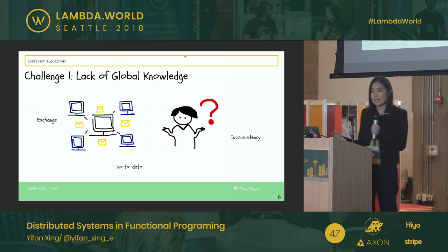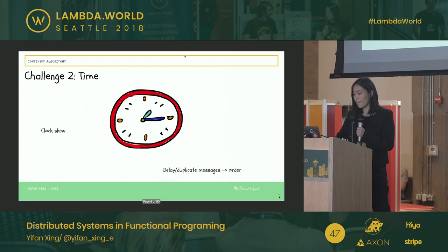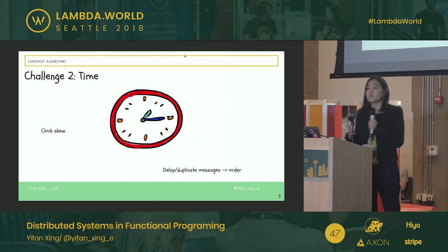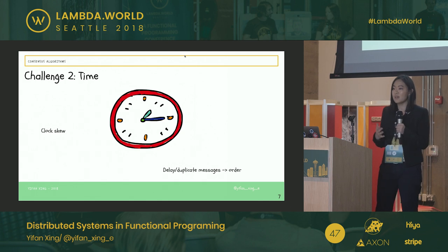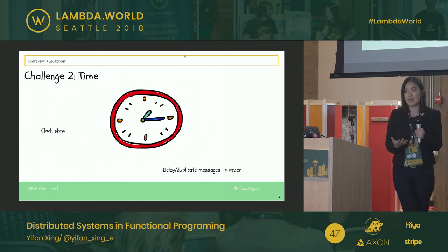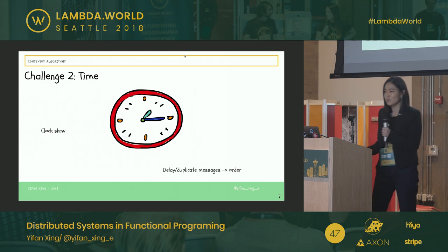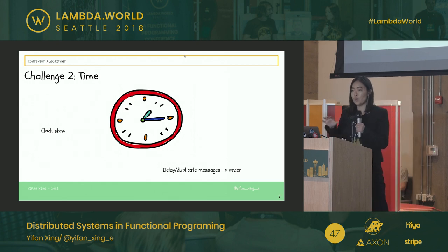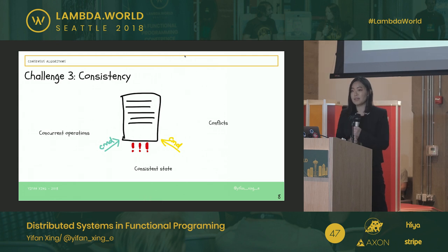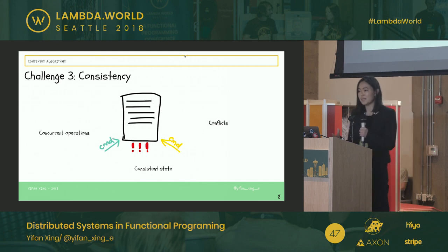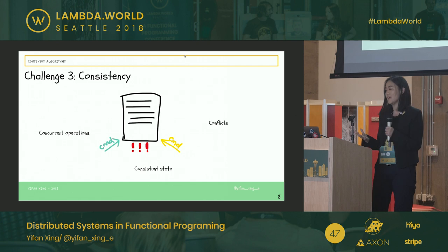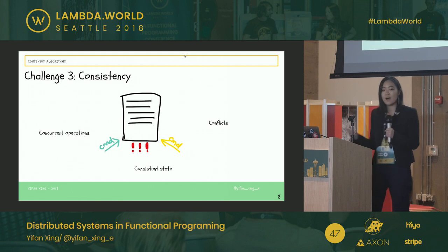How do we detect inconsistencies in the distributed system? We also have different machines working together with their own time, so when there are clock skews, and when we receive delayed or duplicate messages, how do we know the order we receive those messages? It's very common in a distributed system setting to have concurrent operations on one single object. When that happens, how do we ensure that the object is in a consistent state and how do we deal with conflicts?